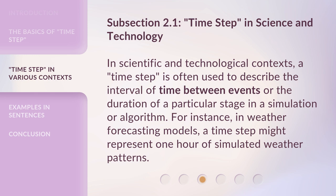Subsection 2.1: Timestep in Science and Technology. In scientific and technological contexts, a Timestep is often used to describe the interval of time between events or the duration of a particular stage in a simulation or algorithm. For instance, in weather forecasting models, a Timestep might represent one hour of simulated weather patterns.